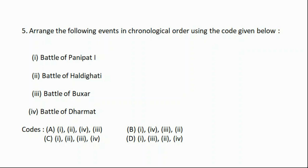Question number five: Arrange the following events in chronological order — option one: Battle of Panipat, option two: Battle of Haldighati, option three: Battle of Buxar, option four: Battle of Dharmat. The correct answer is code A: one, two, four, three — that means Battle of Panipat first, then Battle of Haldighati, Battle of Dharmat, and Battle of Buxar.